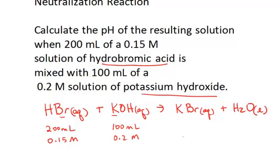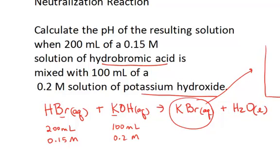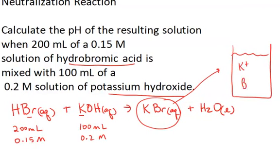If we have one-to-one molar amounts of the strong acid and the strong base, the resulting solution will have a pH of 7, because the salt produced — potassium bromide — when dissolved in water dissociates to give the potassium ion and the bromide anion. Since potassium is a cation from a strong base, it doesn't have sufficient acid strength to react with water. Bromide is an anion of a strong acid and is not a sufficient base to react with water. They're just spectator ions that float around in the water.